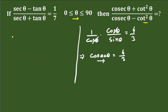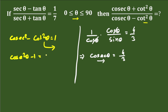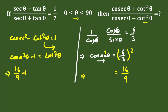Now we need to find cot²θ. We know the identity: cosec²θ minus cot²θ equals 1. Rearranging, cot²θ equals cosec²θ minus 1. Since cosec θ equals 4/3, cosec²θ equals 16/9. So cot²θ equals 16/9 minus 1, which is 16 minus 9 over 9, giving cot²θ equals 7 divided by 9.